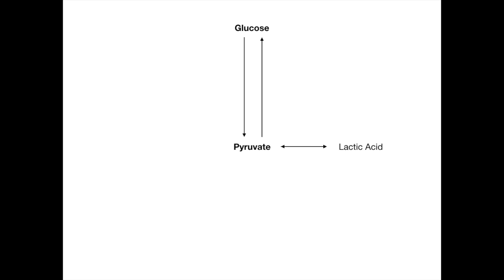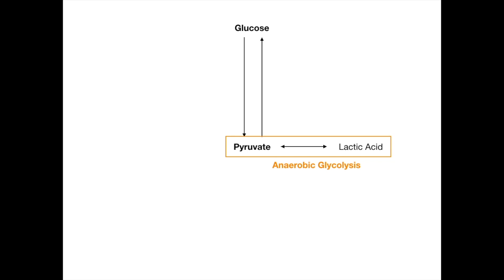The first pathway that pyruvate can take is to turn itself into lactic acid, aka lactate. When it does this, we're talking about the pathway referred to as anaerobic glycolysis. The word anaerobic means in the absence of oxygen — there is no oxygen. Recall that glycolysis and all metabolic pathways have one goal in mind: to work in tandem to form cofactors and reactants that can ultimately be sent to the electron transport chain to generate a massive amount of ATP.